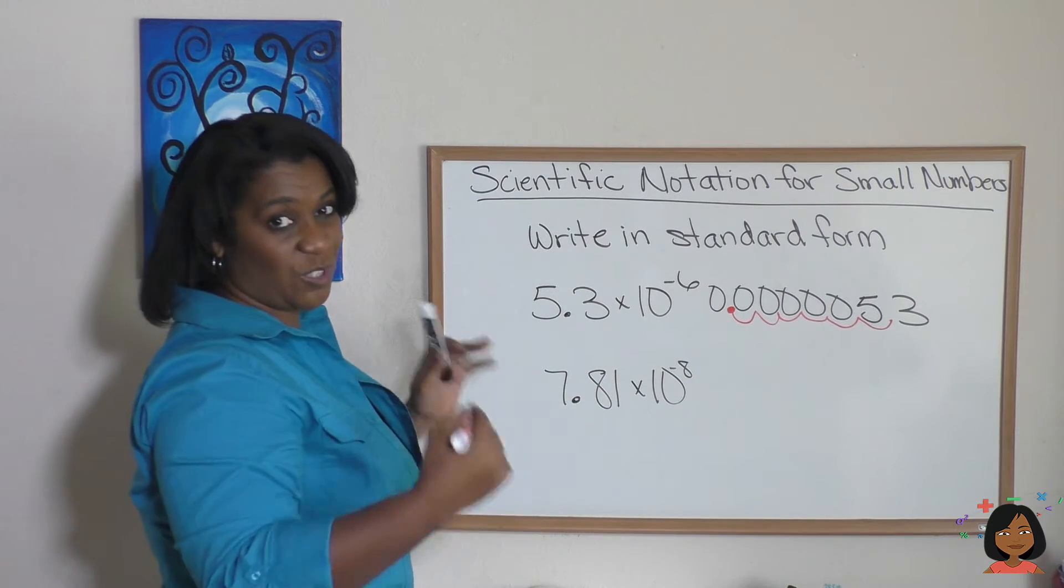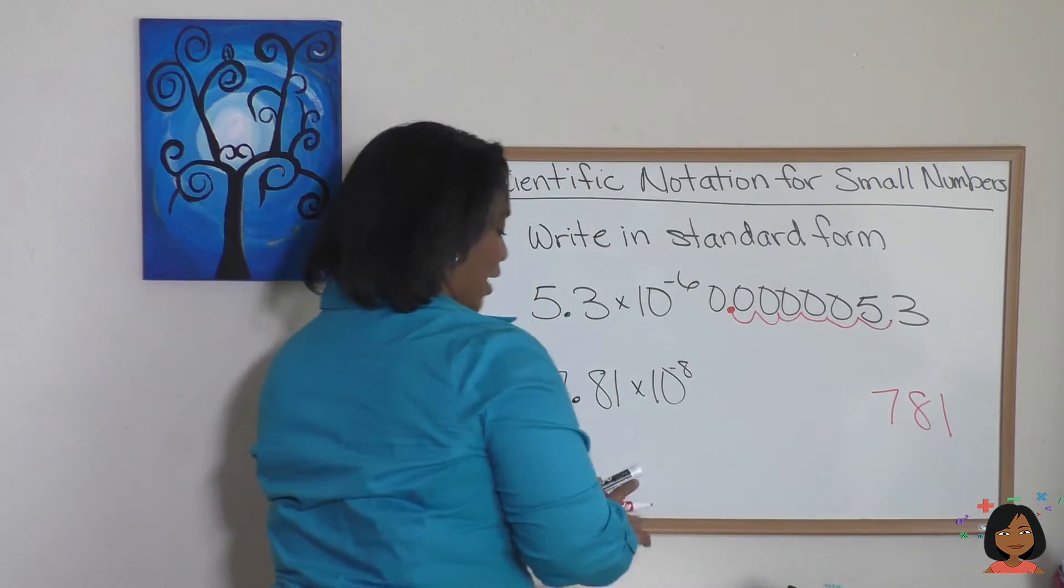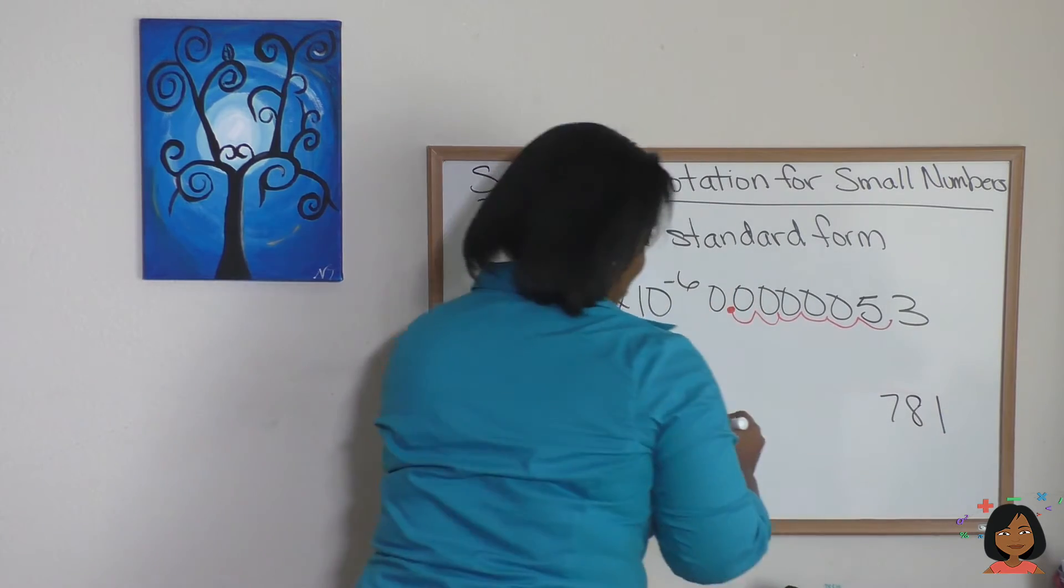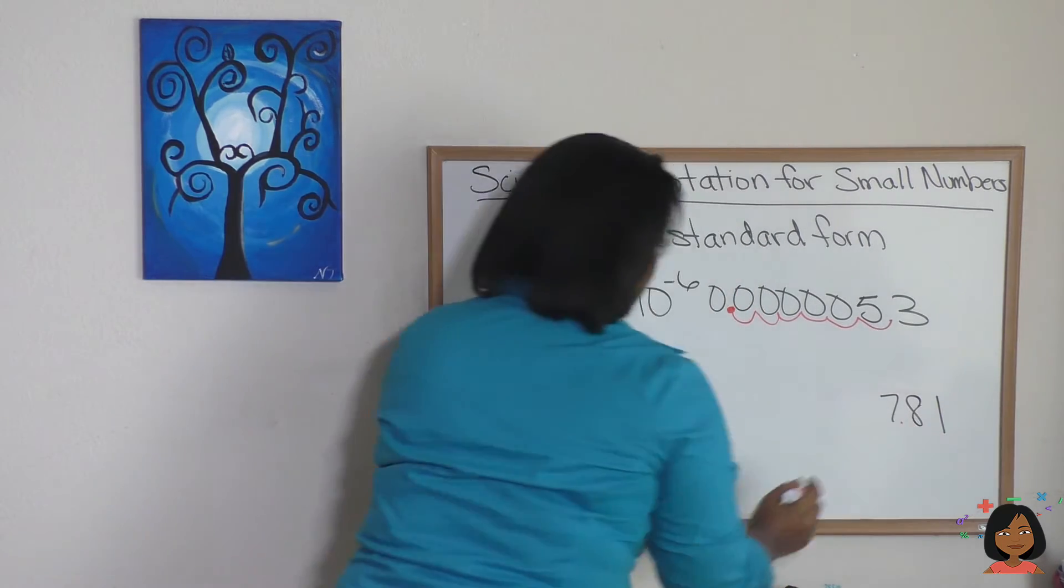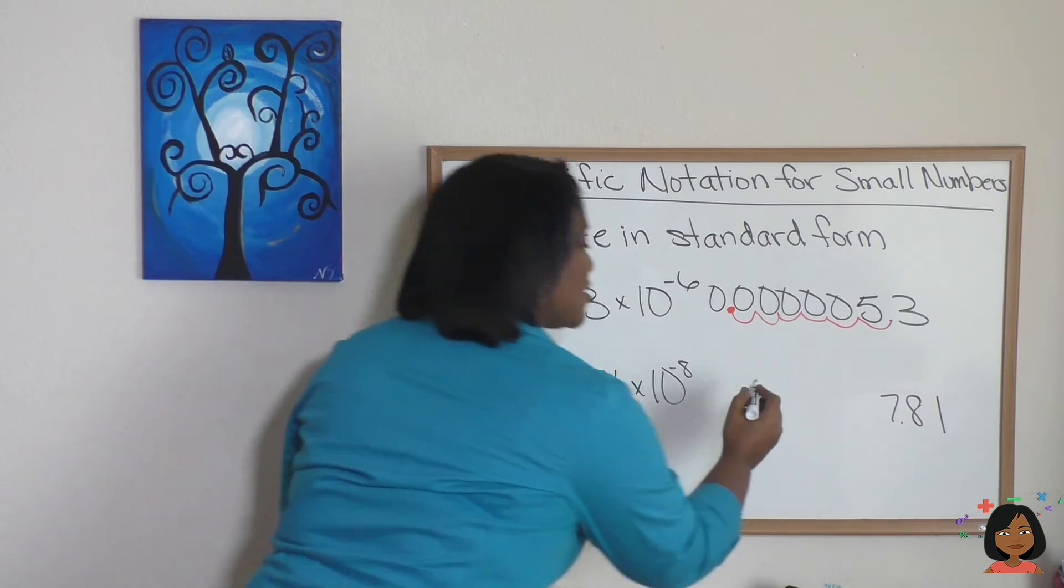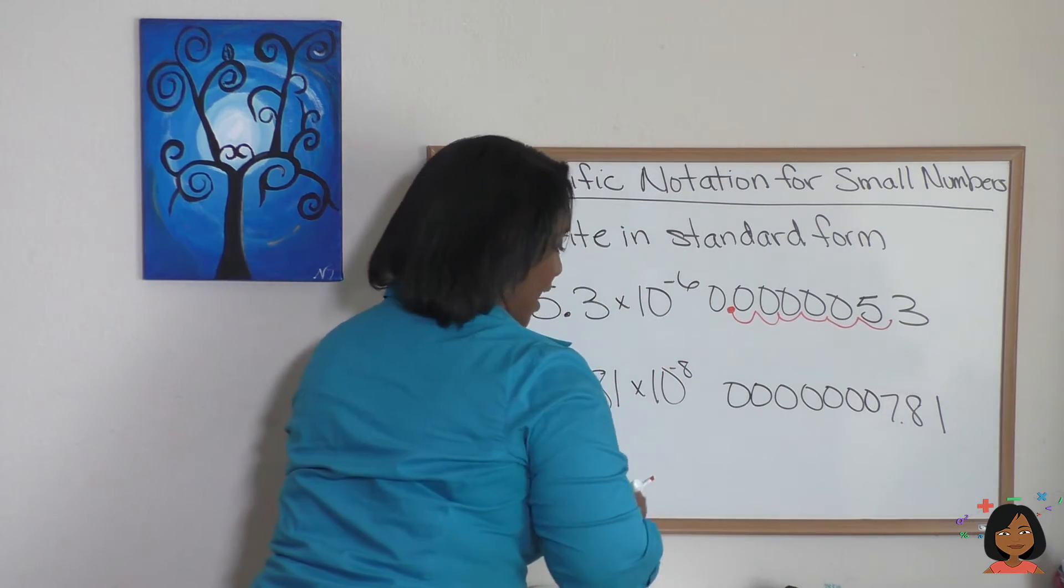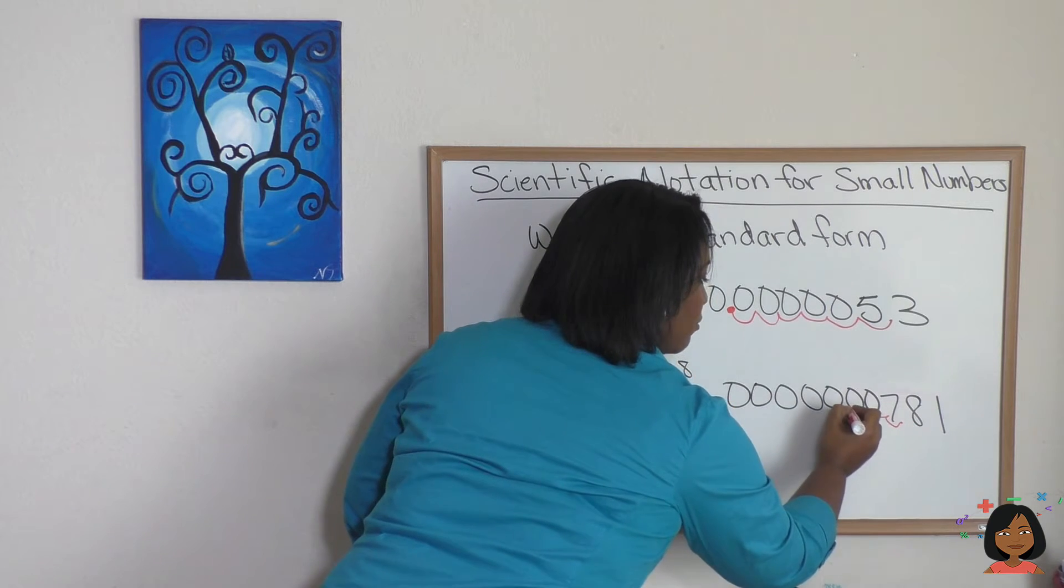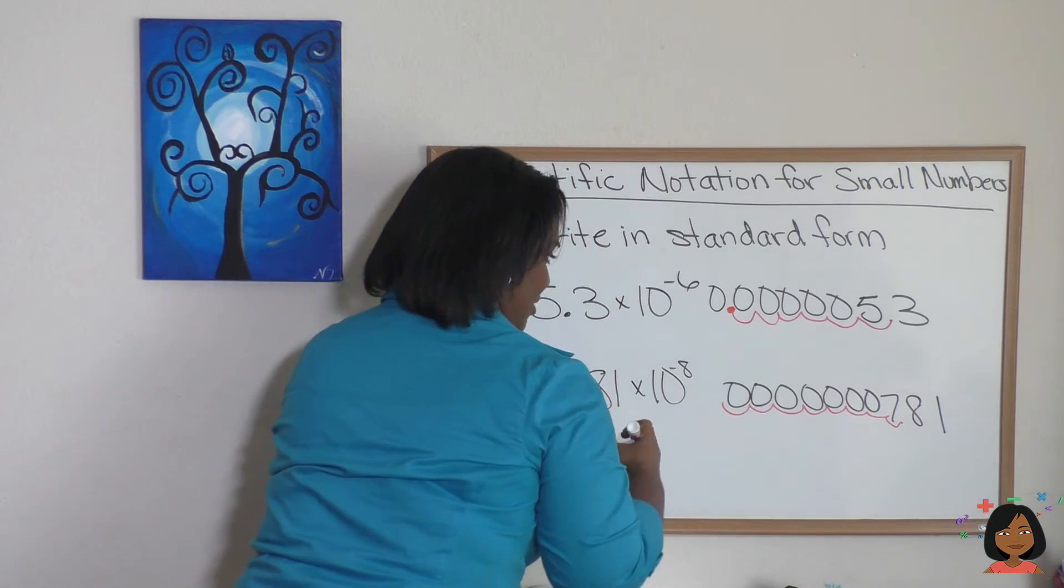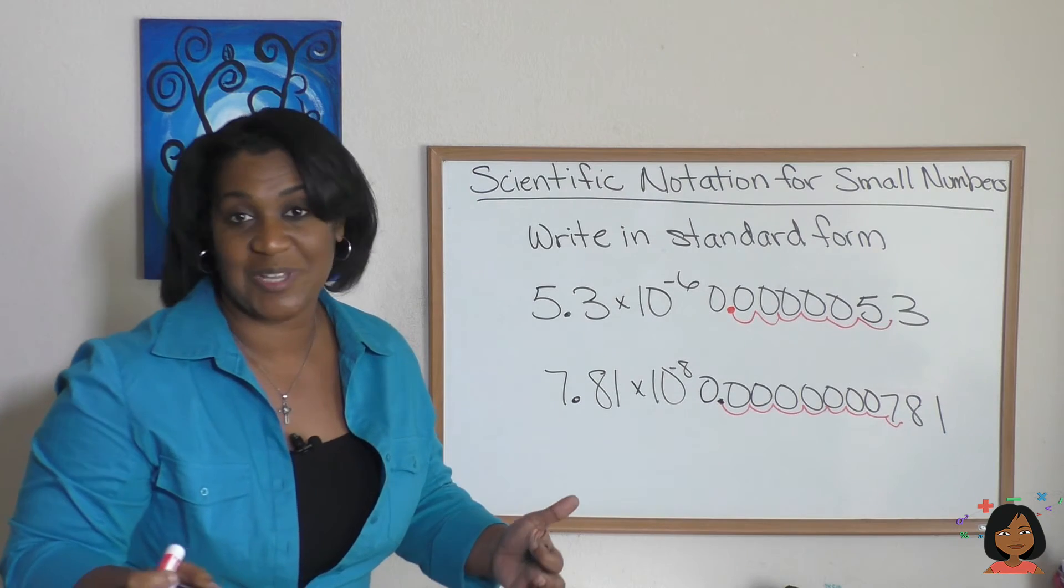Let's try it again with this. We're going to write our 781 down. The decimal starts here, but we're going to move it eight places to the left. I'm going to throw some zeros in just to get me started, and we'll make sure we've done enough. Here we go: 1, 2, 3, 4, 5, 6, 7, 8. I'm going to put my decimal there and add a zero on the front. That's how you do it in reverse.